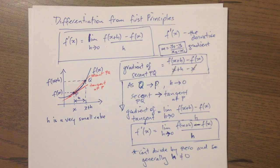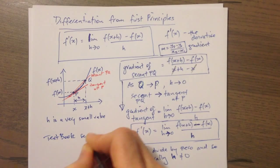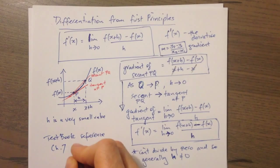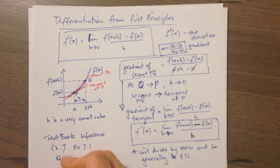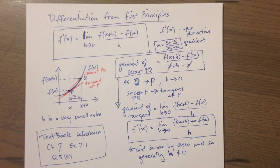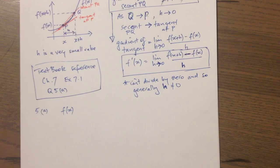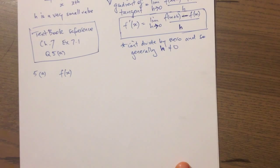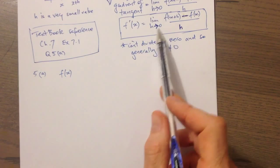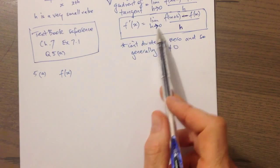Let's have a look at an example. For students working out of a textbook, the reference will be exercise 7.1 — we're looking at exercise 7.1, starting at question five. So the function is f of x equals x squared plus 5x minus 7.